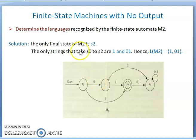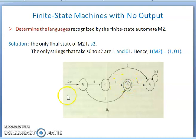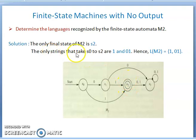Next, determine the language recognized by finite state automata m2. There is only one final state: s2. The starting state is s0. The only strings that take s0 to s2 follow two possible paths: directly from s0 to s2, or via s0 to s1 to s2.